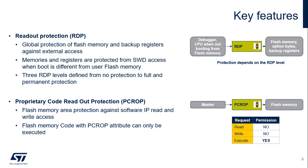Readout protection, or RDP, is a global mechanism that prevents external read access to flash memory, option bytes, and backup registers. An external access can be gained by using a JTAG connector, a serial wire port, or the boot software embedded in the SRAM.